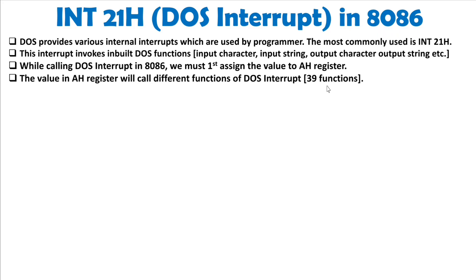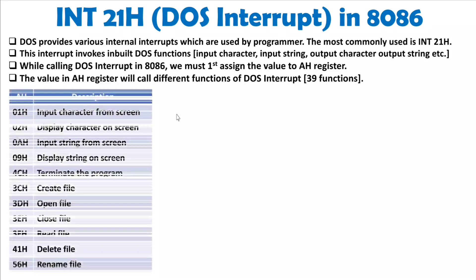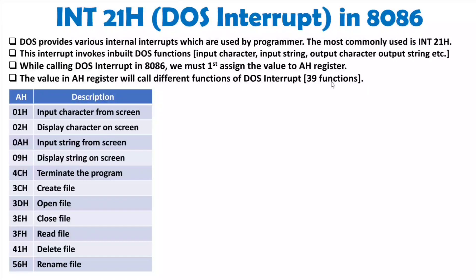You don't need to remember the names of all 39 functions. Here are the most commonly used ones: load AH with 01h to input a character from screen; load AH with 02h to display a character on screen; load AH with 0Ah to input a string from screen; load AH with 09h to display a string on screen; and load AH with 4Ch to terminate the program. There are also various AH values to create, open, and close files.